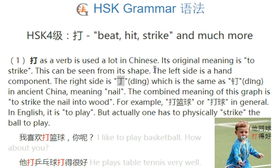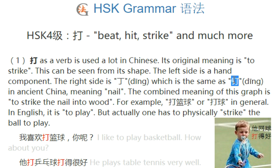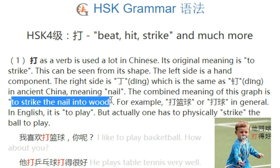The first grammar point about 打 is its original meaning: beat, hit, strike. The character 打 has two parts. The left-hand side is the radical for 'hand,' and the right-hand side is the character 丁, meaning 'nail.' So the combination — hand and a nail — means you strike a nail into the wood. That is the basic meaning of the character.